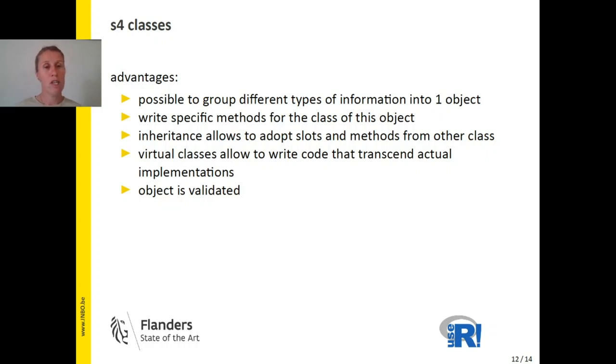Which I didn't cover yet in the previous slide is that an object is also validated. So when making an object, the data types given in the parameters of the object are checked with the data types that are defined in the slots of the classes. And only if they meet, the object will be created. This means that once an object is created, you don't need any checkups in your methods, which can save you a lot of coding.